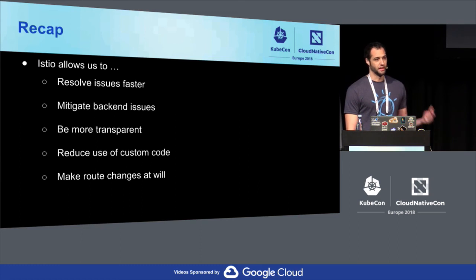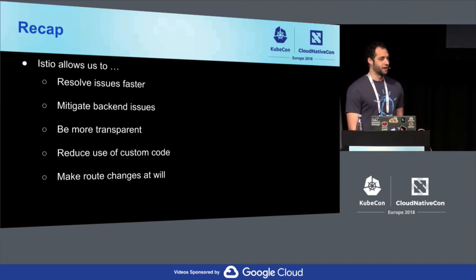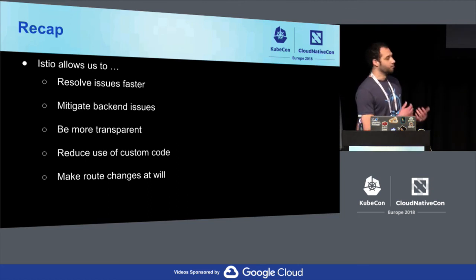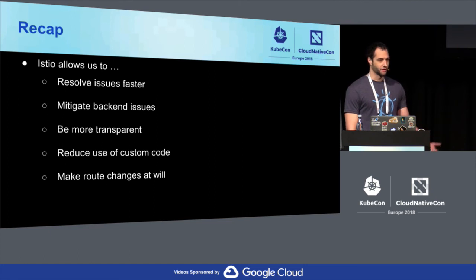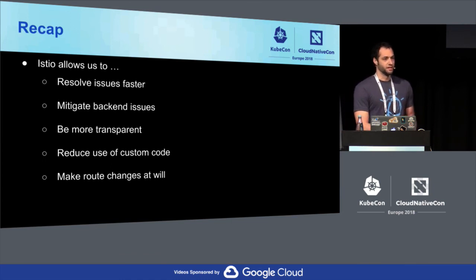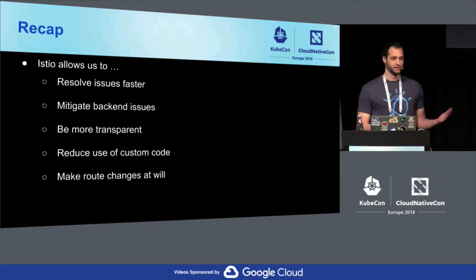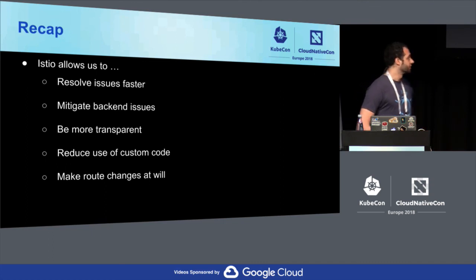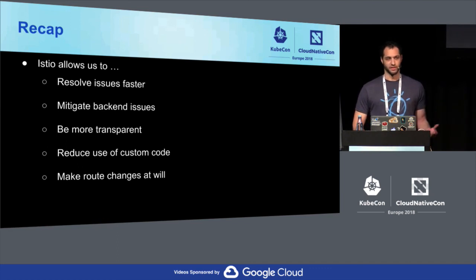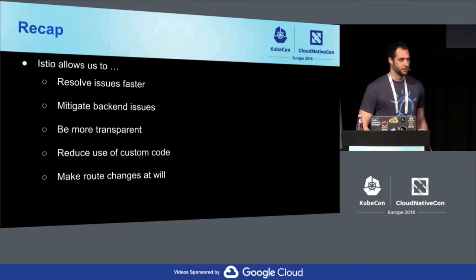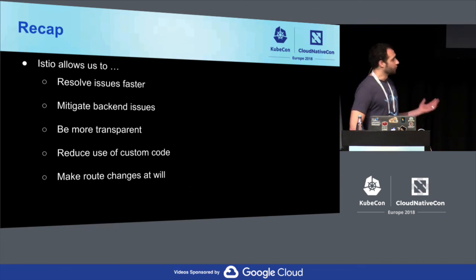As a recap: Istio allows us to resolve issues a lot faster — I just showed you an example. We now have the ability to offer mitigation when APIs are having issues; we can circuit break and cut them off until they're healthy again. It allows us to be way more transparent in the routing. Currently teams have to come to us and we have to help investigate how traffic is routing to their system, but Istio's telemetry and monitoring lets us be very transparent about what's going on to a certain backend. It reduces a lot of custom code, and we get to dynamically update routes, allowing teams to try things out in production and release beta APIs.